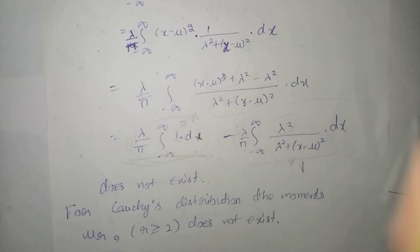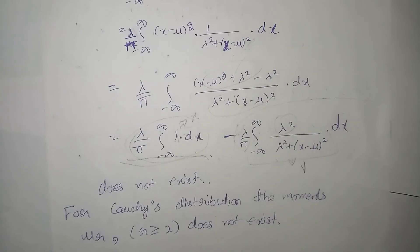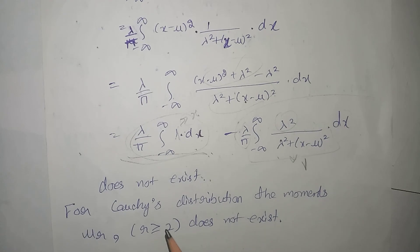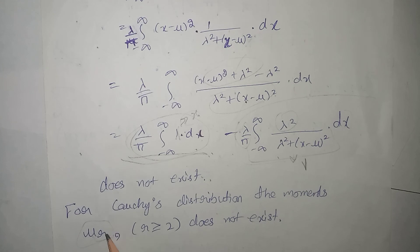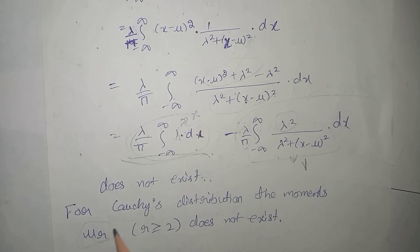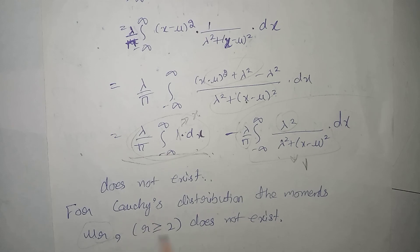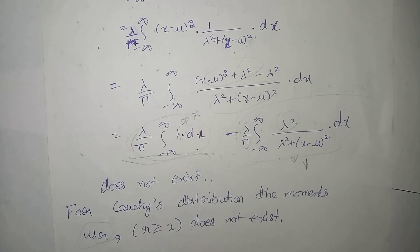And further aur. Humein aur bhi malum hona chahiye. That is. Humare jo Cauchy distribution ke. Baaki bhi sabhi moments hote hai. That is mu r. That is rth moment about mean. Yeh uska sign hai. Agar humare r ki value 2. Ya uske baad koi bhi put karte. That is mu 2, mu 3, mu 4. Kuch bhi put kar hai. Woh sabhi humare exist nahin karte Cauchy distribution mein.